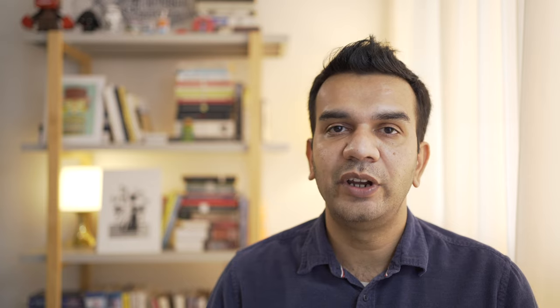Once you have done that, you move on to the next stage, which is trying to understand the requirement from the research. In this section, you need to talk about the information or the solution that research needs to deliver to help you overcome the issue and achieve the ambition you have set out. Do not prescribe a research methodology, a sampling outline, or start talking about costs in this section. Simply by doing these three things, you will have a very clear way of arriving at the correct research objectives.